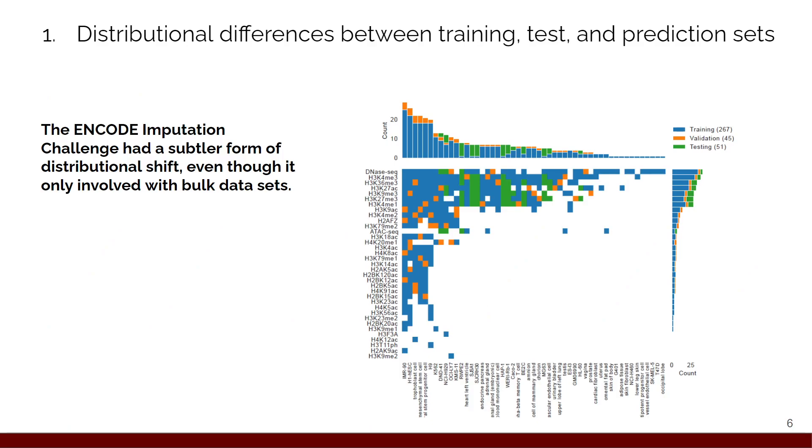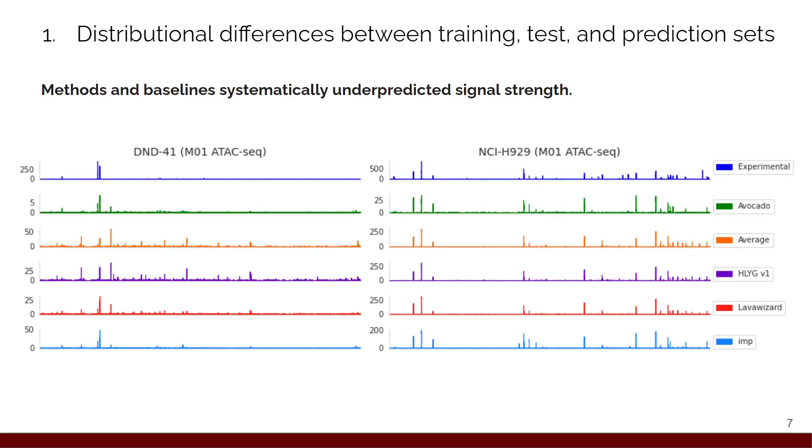Even though single-cell data is kind of the canonical example, there are more subtle ways that distributional differences can occur in genomics data. We recently finished the ENCODE imputation challenge. This was basically a challenge where people were provided with ChIP-seq, DNase-seq, and ATAC-seq data from around 180 different experiments and had to impute the held out ones. You can see the training, the validation, and the testing sets here. I'm not going to get too much into the details because that doesn't matter as much, but you can see some of the results from the challenge here, two of the tracks that were being imputed.